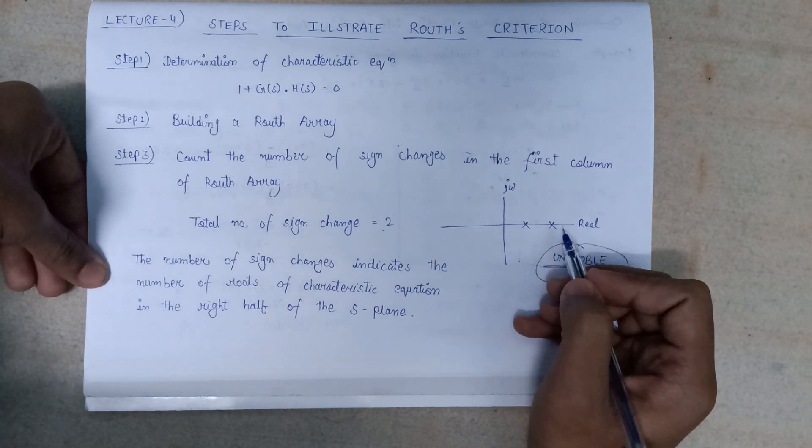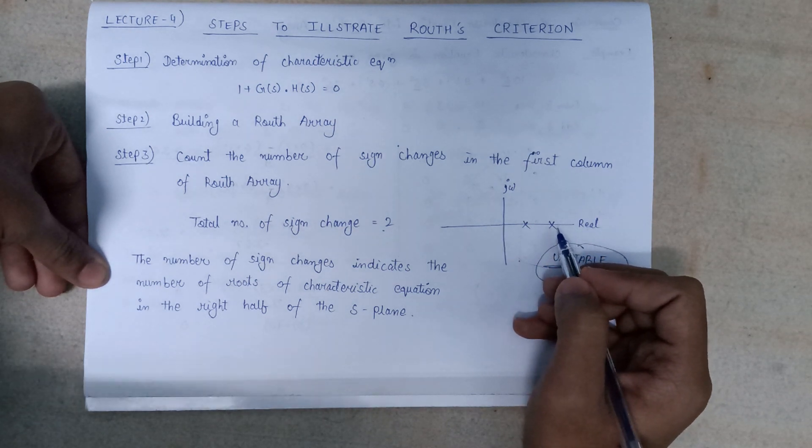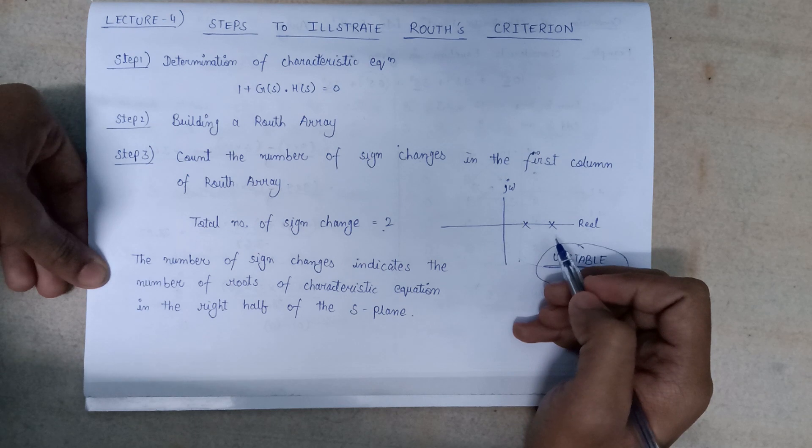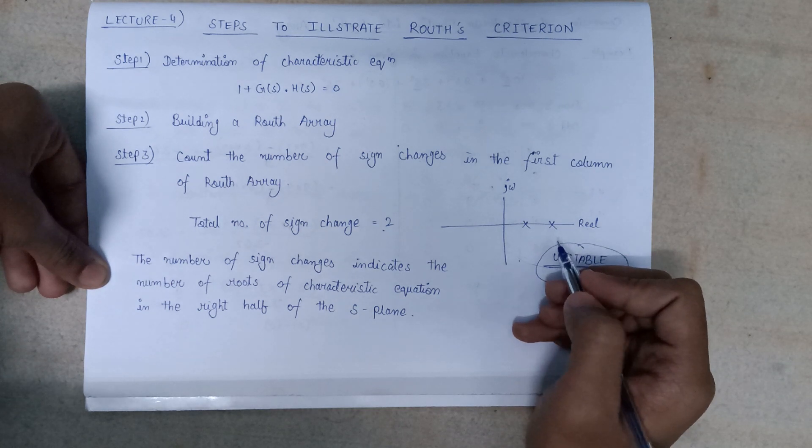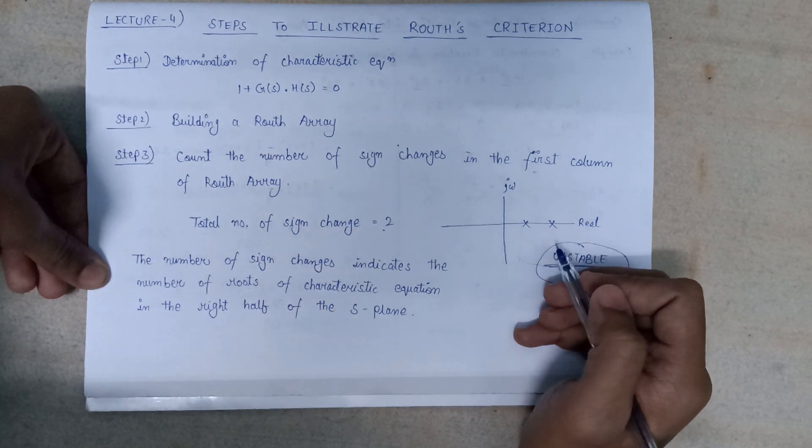And according to the criteria of unstable system, if the roots lie in the right-hand side of the S-plane, then the system is said to be unstable. So we can say that the system is unstable.